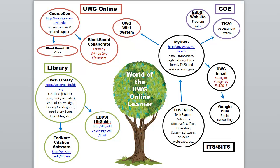Let me introduce you to the world of the UWG Online Learner. As you can see here on this map, we've got four main areas that I've identified: the library, the group on campus called UWG Online, the College of Education, and ITS, also known as SITS — Instructional Technology Services.